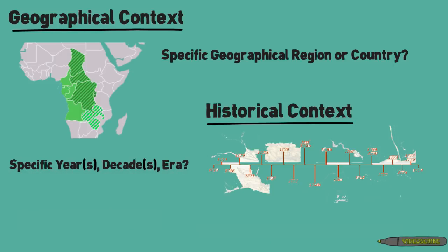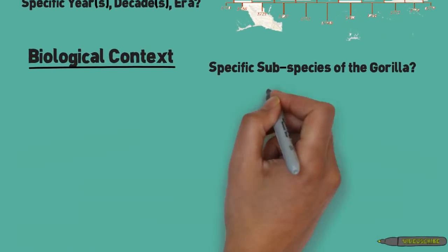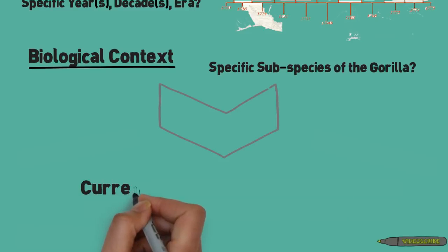And third, with this topic, you could also add biological context. Perhaps there's a specific subspecies of the gorilla that you're interested to write about. So when we combine all three contexts and incorporate them into the original topic, this is what we get.